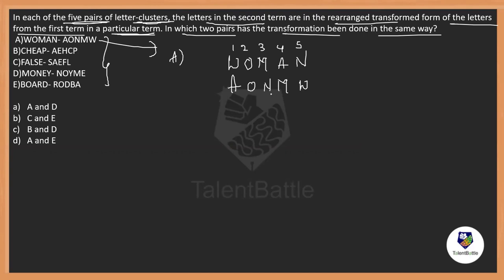Now, what happened? It changed to AONMW. That means, it's going to become four, two, five, three, one. This is going to turn like this: four, two, five, three, one. The rearrangement happened like one, two, three, four, five turned to four, two, five, three, one. Now, we need to observe which of the options that rearrangement is in the same manner.